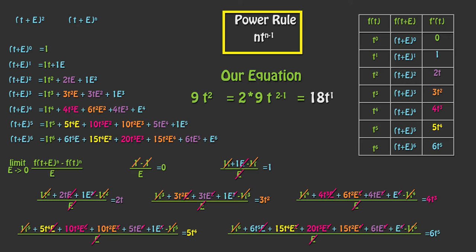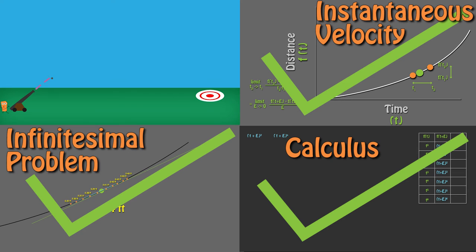We should be able to get by with just knowing the power rule for a while. We have found the velocity at any instant and solved the infinitesimal problem. Now we can move onto the cannonball issue.